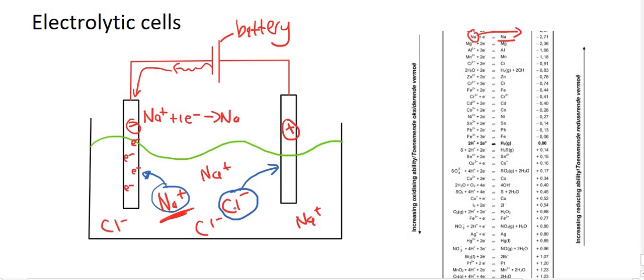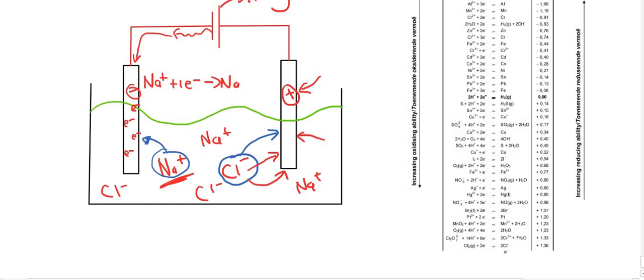Then on the other side, we've got the Cl-, which is going to be attracted to this positive terminal. Now this terminal is positive because there is a lack of electrons. There are hardly any electrons on this electrode. So what happens is the Cl- goes to that electrode and it reacts. And that was according to this reaction down here.